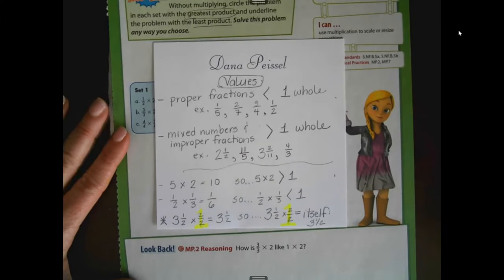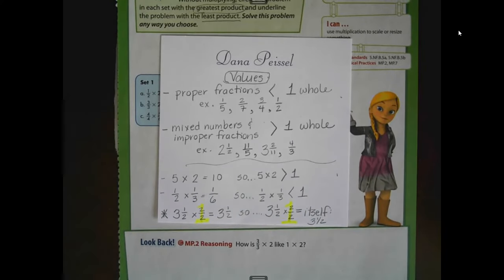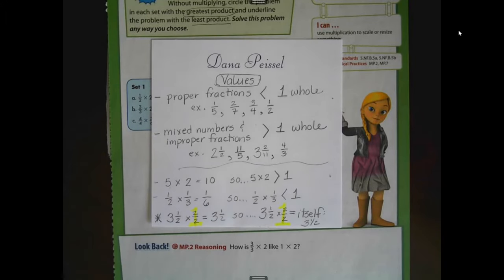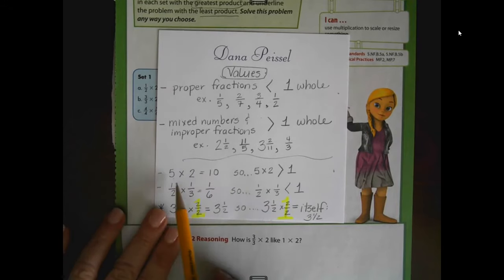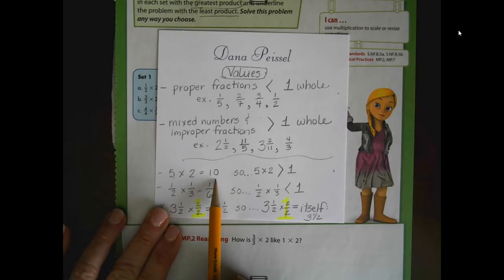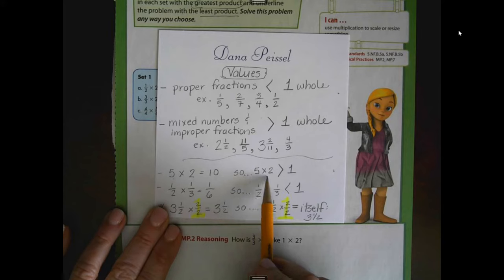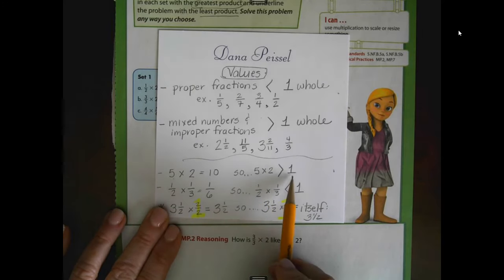Now let's talk about some things that happen when we multiply. If we have two numbers, whether they're whole numbers or fractions, and they have a value greater than one, our product is greater than one. Five times two is ten. When I have two factors that each have a value greater than one, then the product is going to be greater than one.